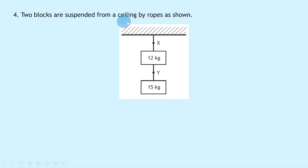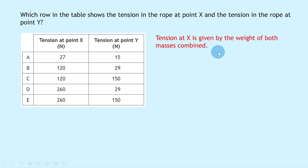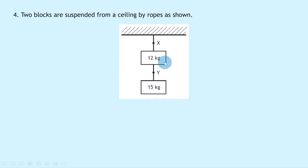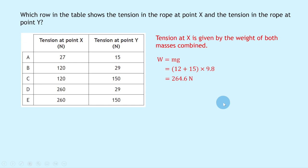Question 4: Two blocks of 12 kg and 15 kg are suspended from a ceiling by ropes, with points X and Y marked. The tension at X is caused by the combined weight of both masses. W = mg = (12 + 15) × 9.8 = 264.6 N, which rounds to 260 N to two significant figures. So we're looking at options D or E.